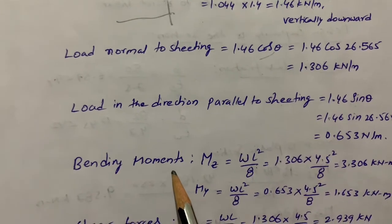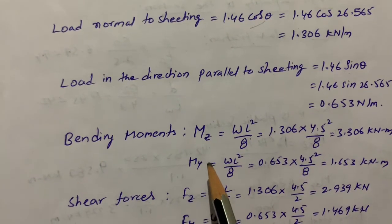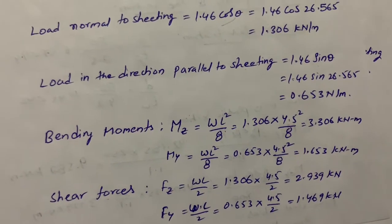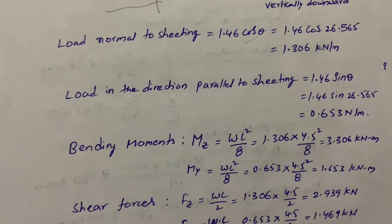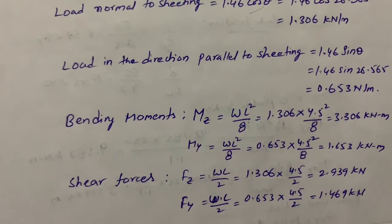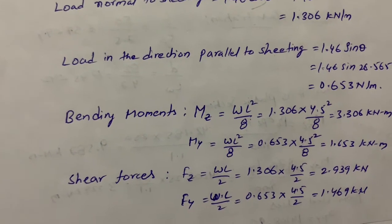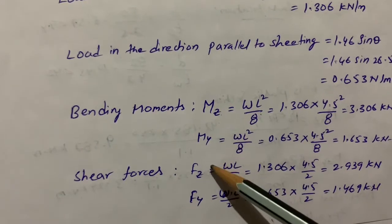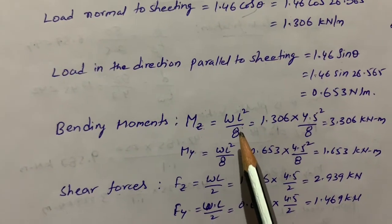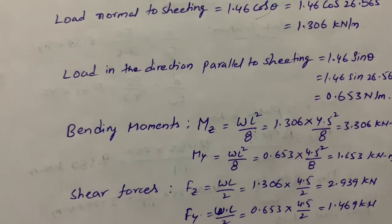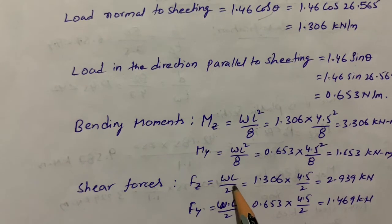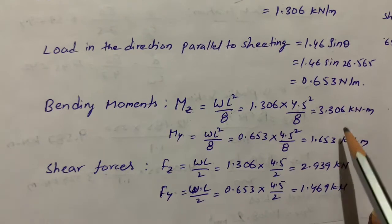After that we calculate bending moment and shear force for ZZ and YY axes. As explained previously, bending of purlins takes place about both YY and ZZ axes — these purlins are subjected to biaxial bending. We calculate moment at Z-axis, shear force at Z-axis, moment at Y-axis, and shear force at Y-axis. The UDL bending moment formula is WL²/8, and shear force is WL/2, giving us the required values.